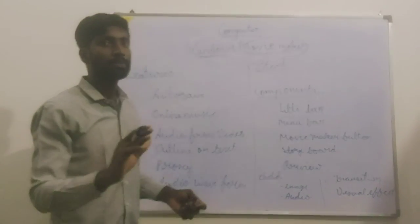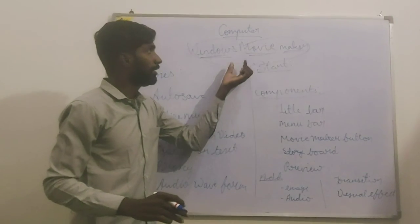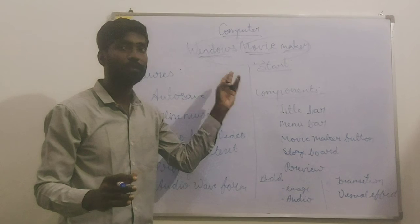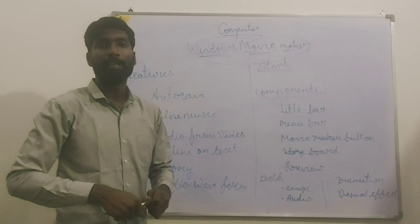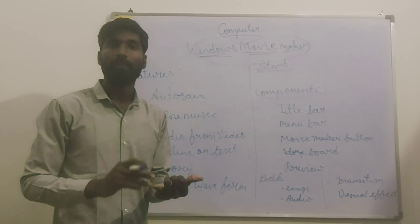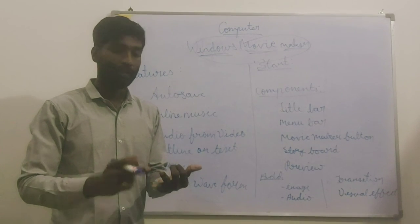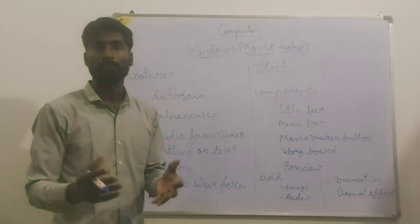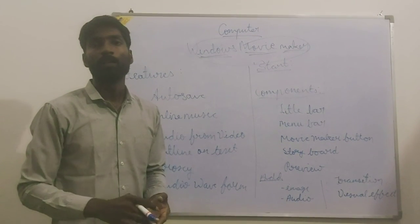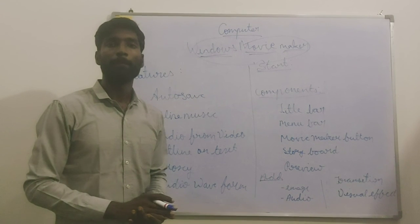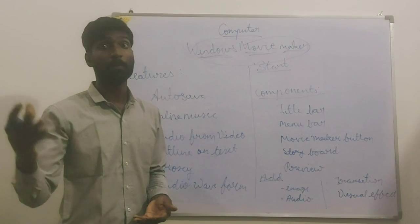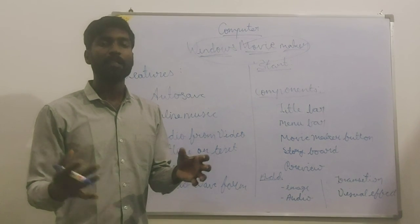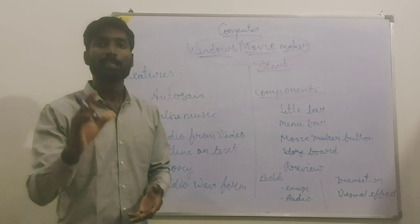Students, please listen carefully. Windows Movie Maker is a software. With the help of this software, we can add pictures, video, text, and audio to make a video — similar to what we do in a mobile gallery or a PowerPoint presentation.